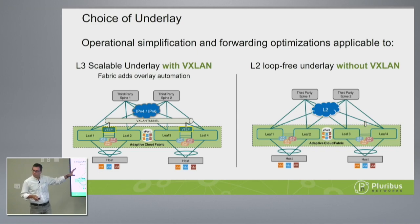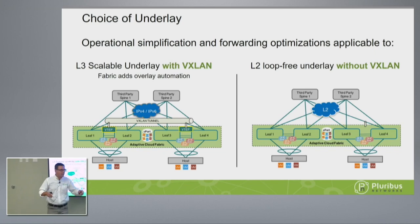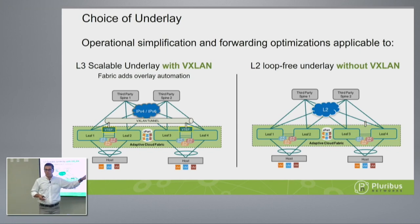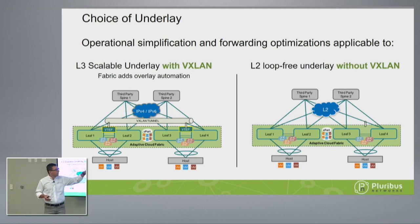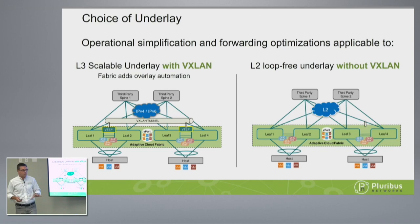VXLAN is maybe the way we'd recommend you build the network — layer 3 as the underlay, scalable networks. But we found so many customers with 8, 10, 12 racks saying: why do I need BGP or OSPF and VXLAN — can you give me these advantages on my standard traditional layer 2 network? And the answer is yes. We can build a loop-free layer 2 environment and still have the operational simplification and forwarding optimizations — there's no overlay automation in that case, but everything else is available. This speaks to the freedom of choice.